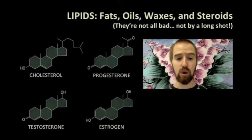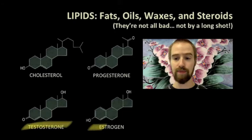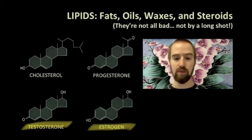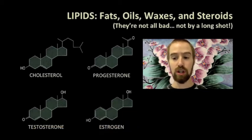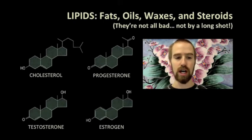The hormones that control our sexual development and our progression through adolescence into adulthood are steroids, and you should notice that they all have pretty much the same overall structure as a cholesterol. These hormones are secreted into the blood, where they circulate around the body until they get to where they need to go. Because these hormones are lipids, they can easily pass through our cell membranes in order to get inside and do their job.